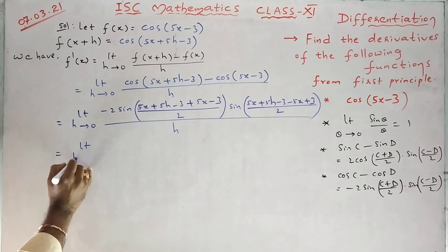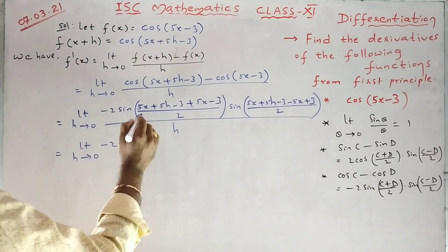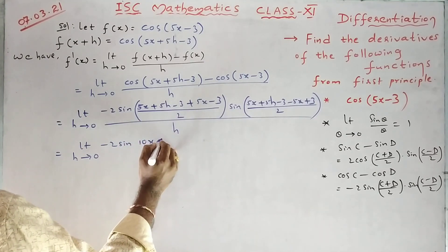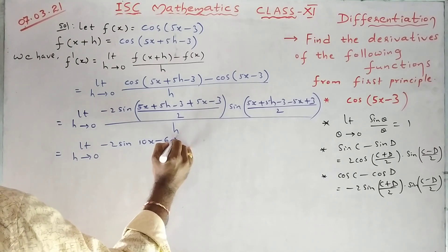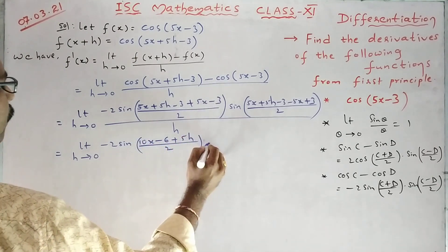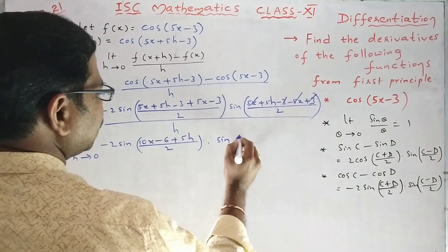Limit h tending to 0 minus 2 sin 5x plus 5x 10x minus 6 plus 5h upon 2 into sin. Here, what is cancelling here? 5x 5x, 3, 3.